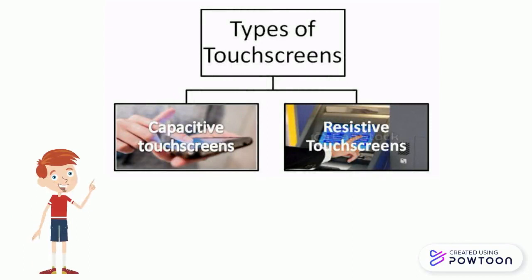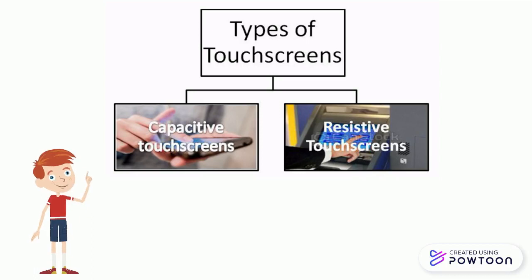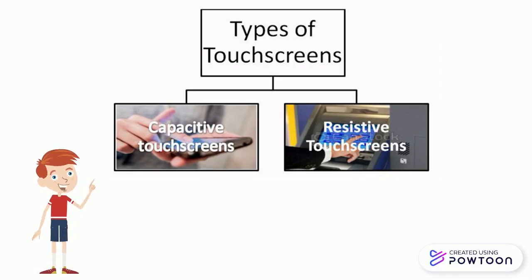There are two main types of touchscreens used in our everyday lives. They are capacitive touchscreens and resistive touchscreens.